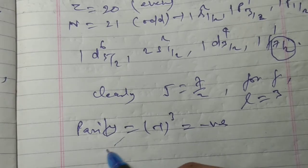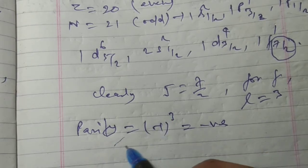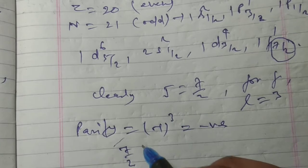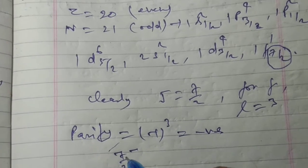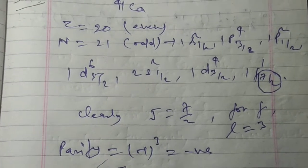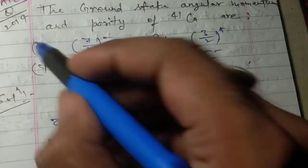So the correct option is 7/2 and negative. So the correct option is A.